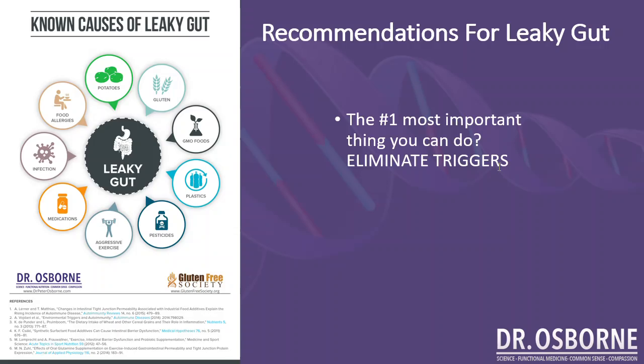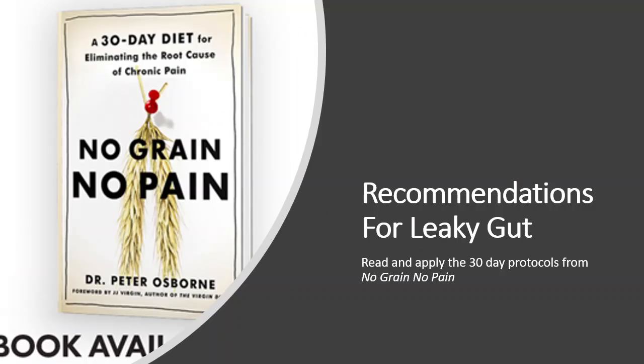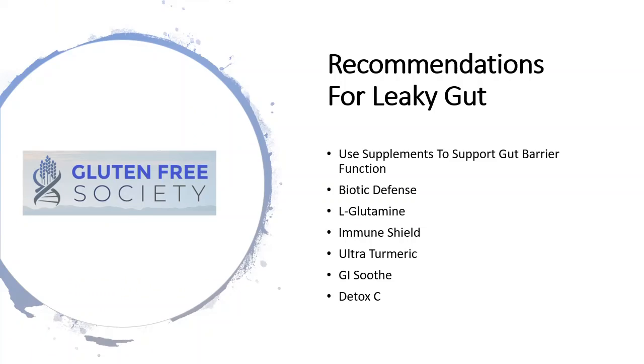Number two, the most important thing you can do is read and apply the 30-day protocol from No Grain, No Pain. In essence, it is a leaky gut diet helping you find and eliminate the triggers. If you haven't read No Grain, No Pain, head over to Barnes & Noble or Amazon and pick up your copy. Make sure you start applying Chapter 7 and Chapter 8 — that 30-day protocol will take your gut a very, very long way.